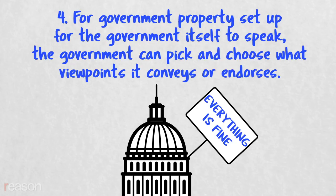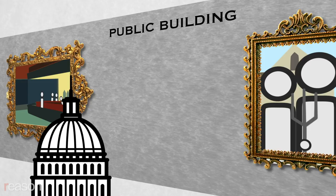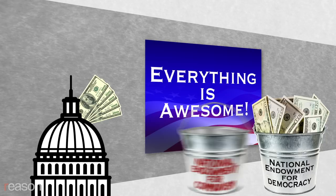Rule 4. Some government property is set up for the government itself to speak, and there the government can pick and choose what viewpoints it conveys or endorses. The walls of most public buildings are an example. The government can choose what art to put up there, and it might refuse to display art that conveys ideas that it dislikes. Likewise, when the government spends money to promote its own messages, it doesn't have to promote rival messages. It can have a national endowment for democracy without having to fund a national endowment for communism.